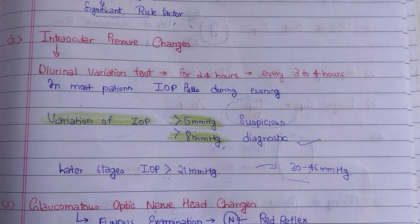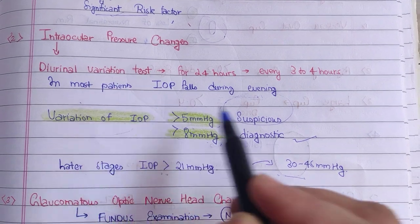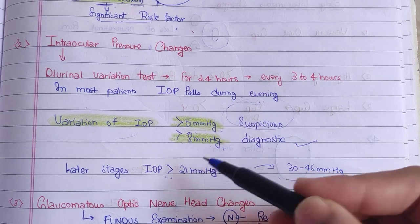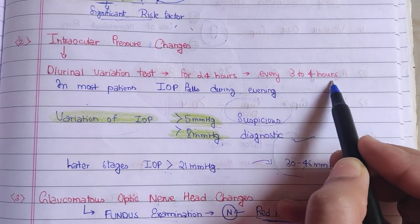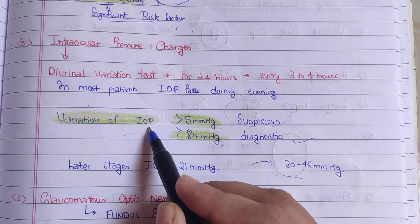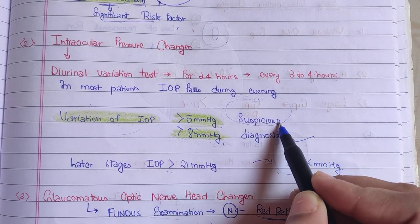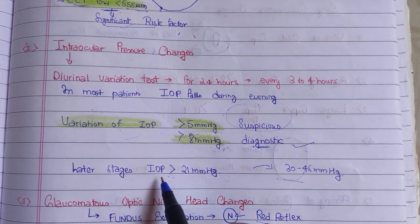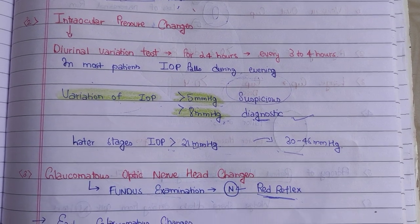Regarding intraocular pressure changes: when glaucoma starts, initially IOP may not be constantly elevated, but in many patients a fall is seen during evening hours. A diurnal variation test can be done, noting IOP every 3-4 hours. If the variation is more than 5 mmHg, it is suspicious; more than 8 mmHg is diagnostic. In later stages, IOP exceeds 21 mmHg.